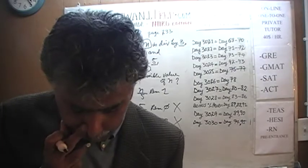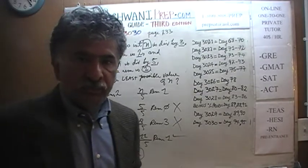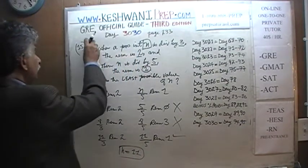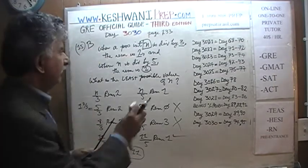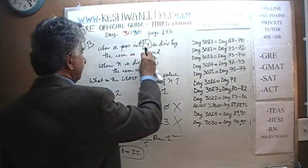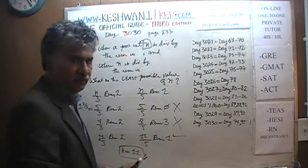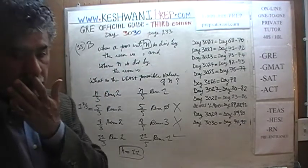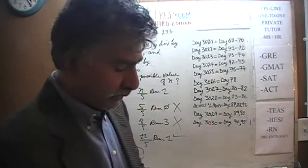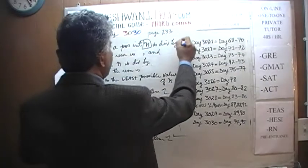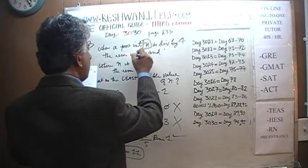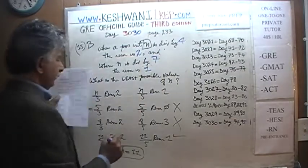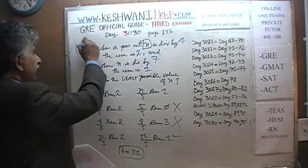Now you do the next one yourself. We'll call the problem we just finished 15A. The bonus problem 15B changes the numbers: when positive integer n is divided by 4, the remainder is 2, and when n is divided by 7, the remainder is 1. What is the least possible value of n? Pause the video and solve it yourself.